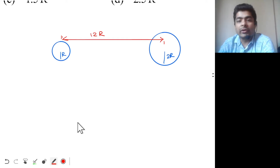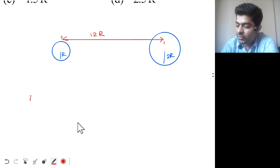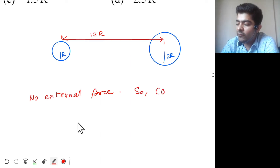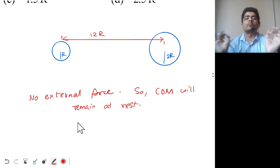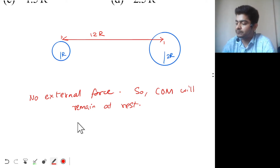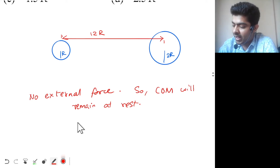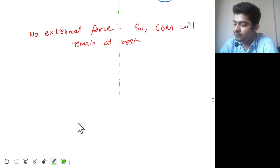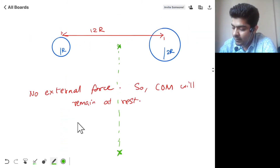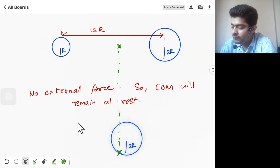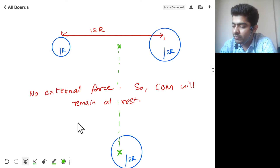They are attracting each other due to mutual gravitational force. There is no external force on the system, so the center of mass will remain at rest — it's holding its position. Let's say the center of mass is initially at this position; finally it will remain at the same position. Only the spheres will move.